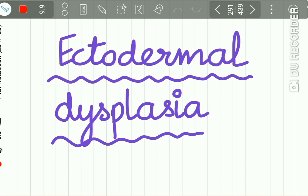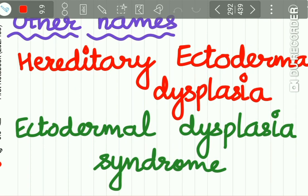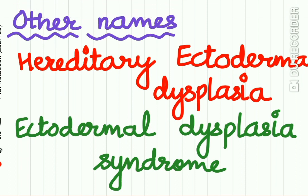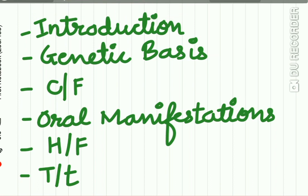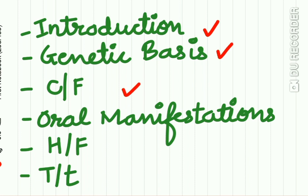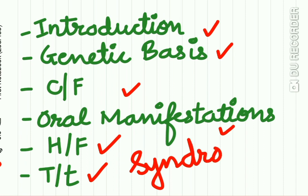Now let us study the first disease of the skin: ectodermal dysplasia. Its other names are hereditary ectodermal dysplasia and ectodermal dysplasia syndrome. We will study this disease under the following headings: introduction, genetic basis, clinical features, oral manifestations, histologic features, and treatment. We will also be studying two syndromes associated with ectodermal dysplasia.